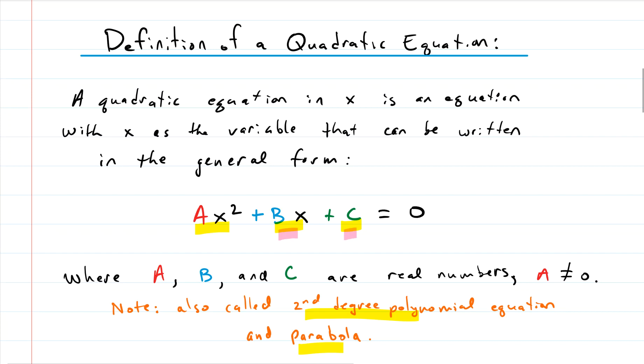The linear term and constant term don't necessarily have to be there. They often are, but you always have to have the first term, the quadratic term, or you don't have a quadratic. The A, B, and C are just real numbers, and that's pretty much it.